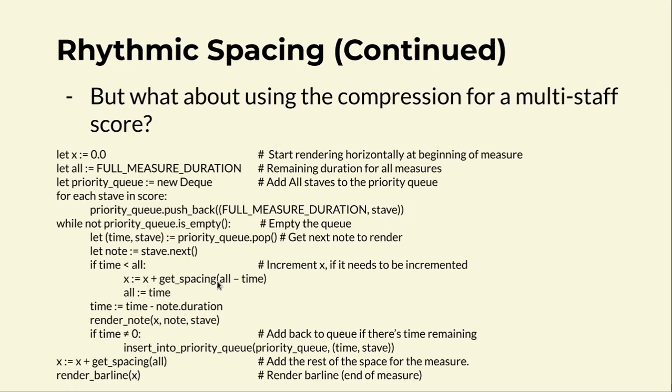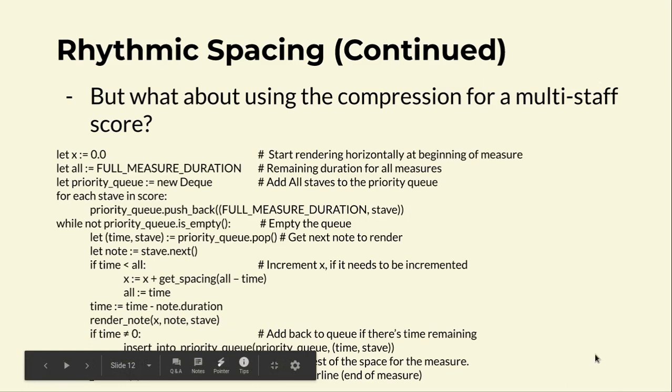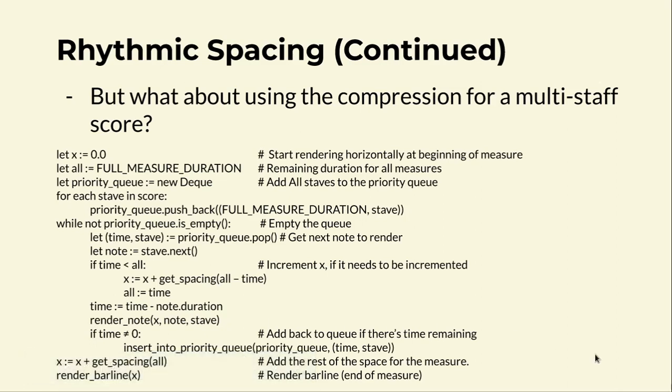We add the space by creating a note duration based on the difference between the currently drawn note and the previously drawn note. Then we update the time variable before adding it back to the queue and actually render the note. If the time equals zero, we won't insert it back into the priority queue — that's how we exit the while loop. Once done, it's finished drawing all the notes, then we add the space for the rest of the measure, which is what the second-to-last line does. At the very end we render the bar line to end the measure.